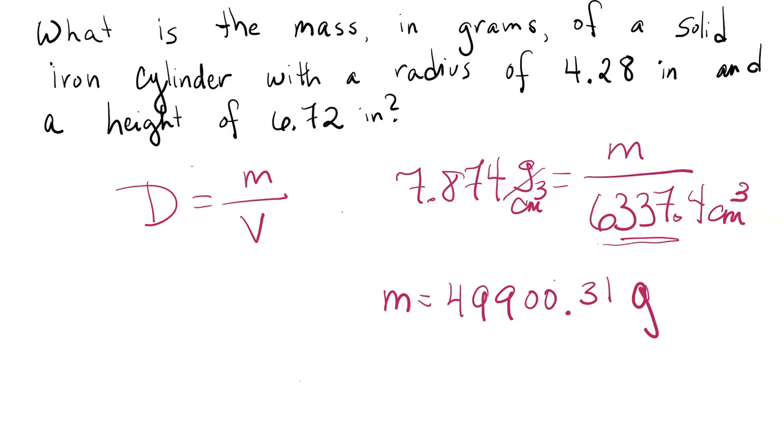Now, that is not quite the final answer that we need to report. Remember that we've got to use sig figs whenever we do a calculation in chemistry. The density that we look up, since it's a constant, we assume that it has infinite sig figs. We assume that pi has infinite sig figs. And the 1 inch equals 2.54 centimeter conversion factor also has infinite sig figs. The radius and the height each have 3. That means that our final answer needs to have 3 significant figures.